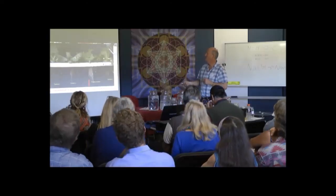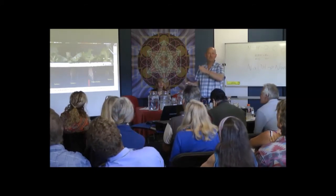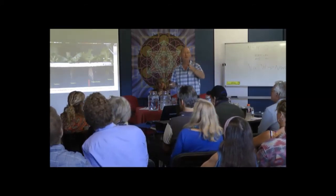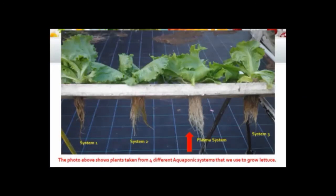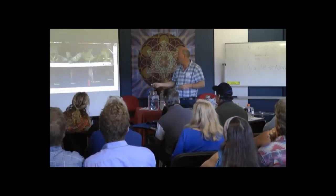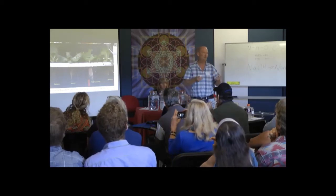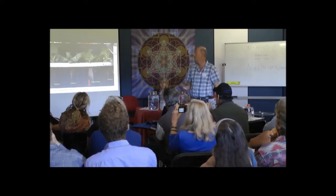This shows the root structure from our different systems. We only put plasma in the white system and left the others the same to see what would happen. The plasma system roots are much whiter — it's a bit of a bad photograph — but the others were very dark. You could easily pull those roots off because they were rotting in the hot water, whereas the plasma roots were white and firm.